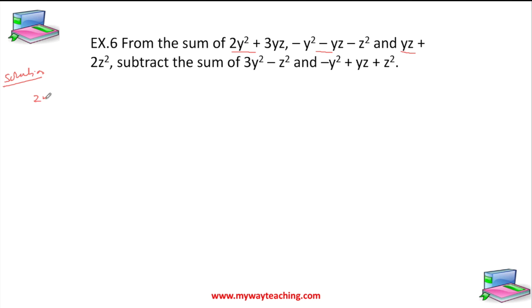So we write 2y² + 3yz. The next term is -y² - yz. The third term is yz + 2z².